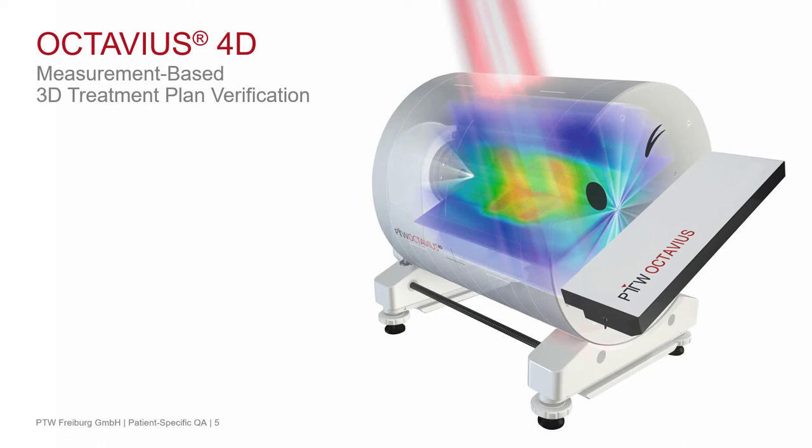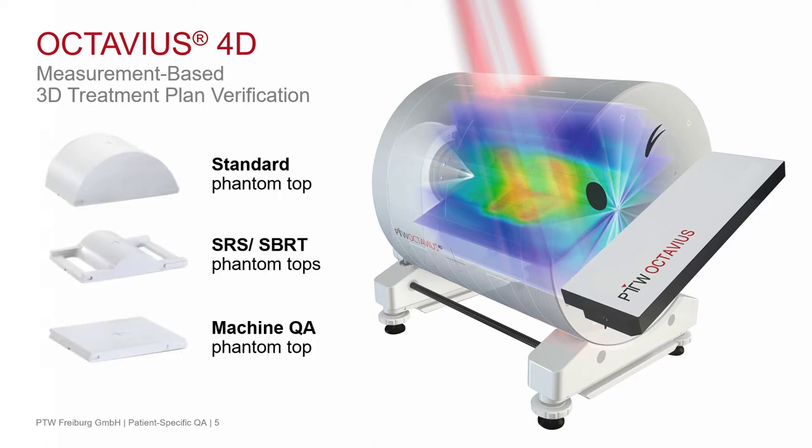Additionally, there is the Octavius 4D phantom. It is a rotating modular phantom with four different changeable phantom tops — one for machine QA and three for patient-specific QA, which differ only in their diameter, so that you can choose the best top for your application such that the phantom geometry is similar to your patient geometry. You have real 4D measurements with the beam always perpendicular to the measurement array, and you use only PDD files to reconstruct a TPS-independent 3D dose.